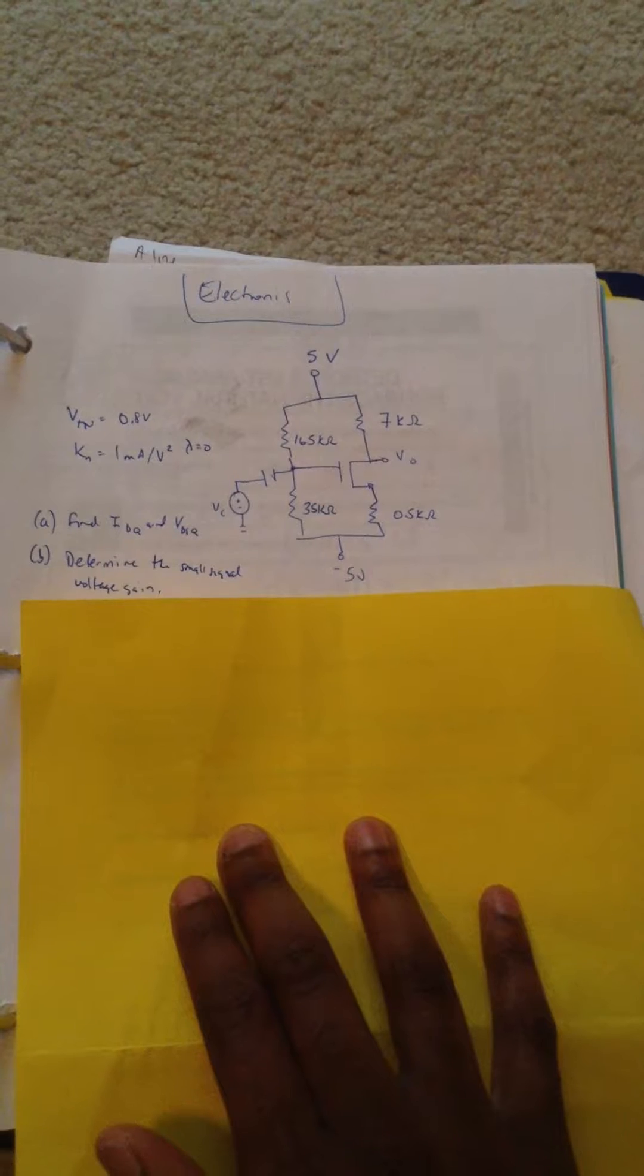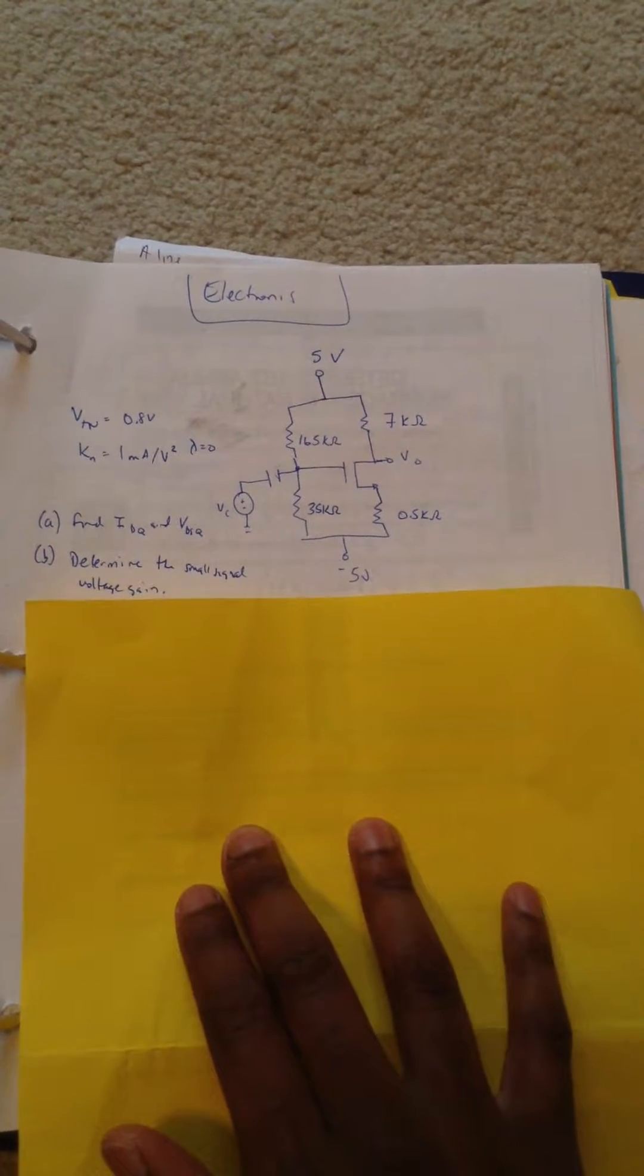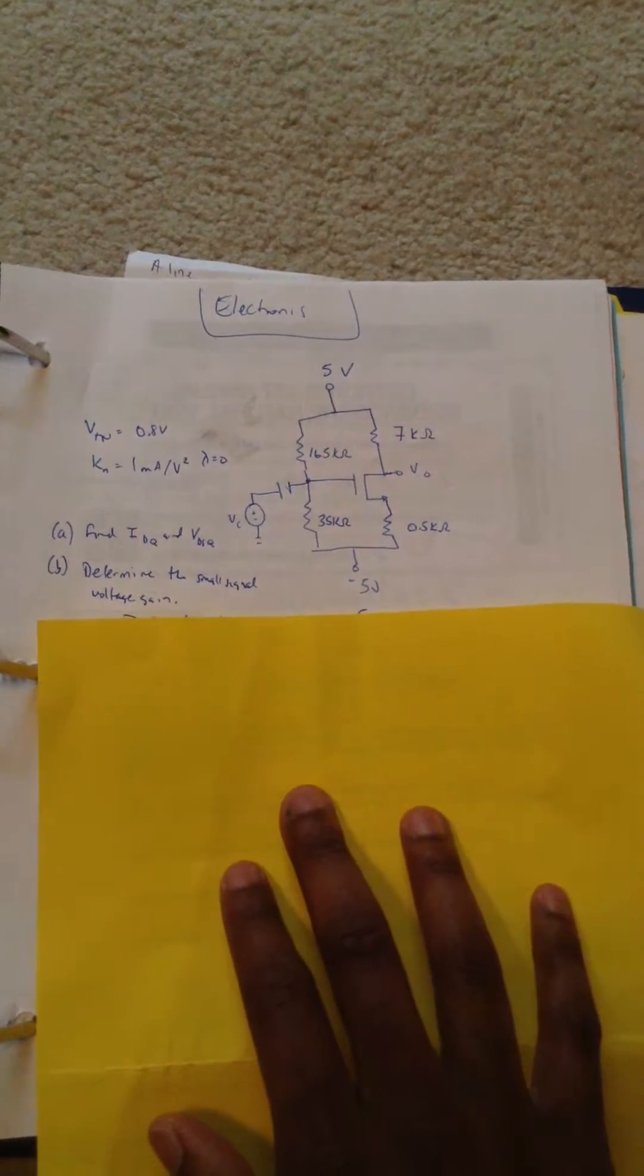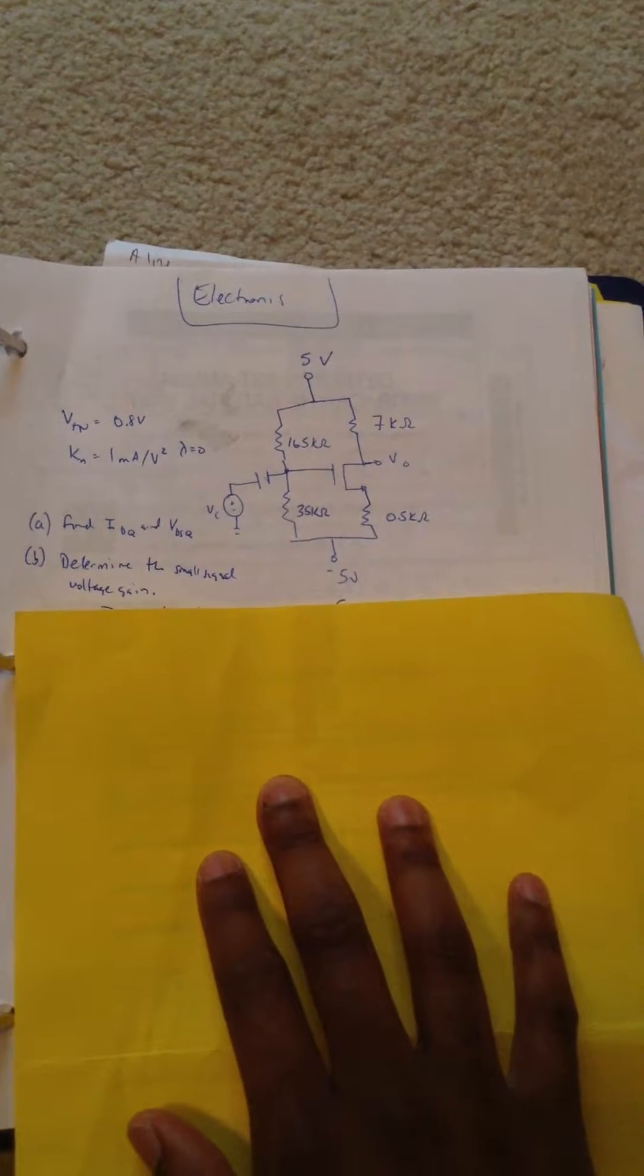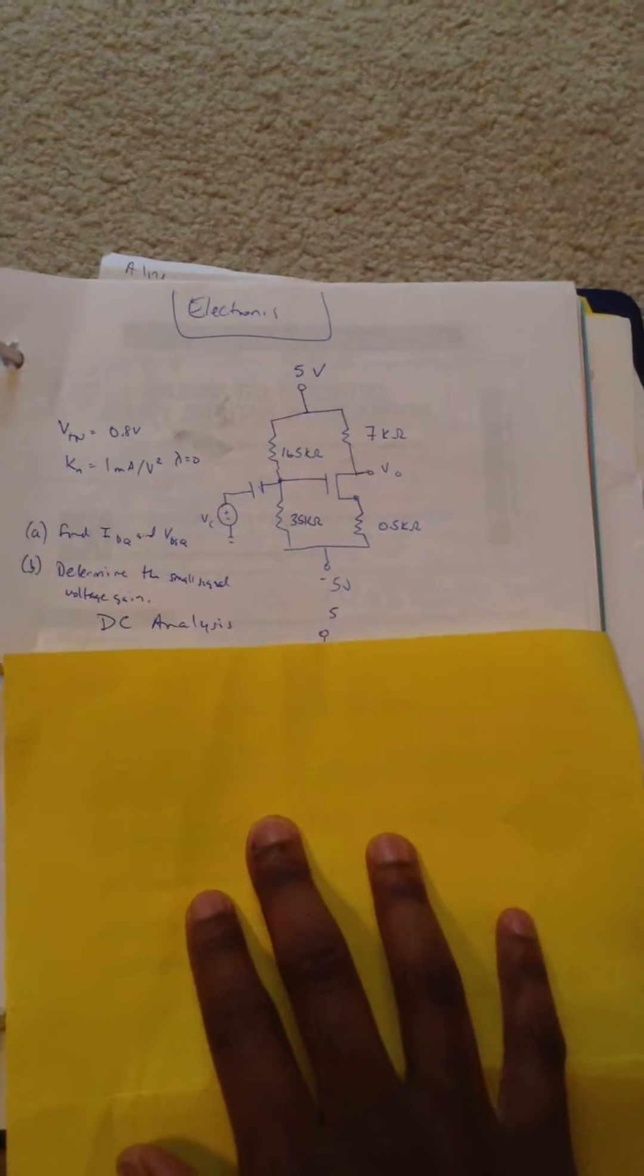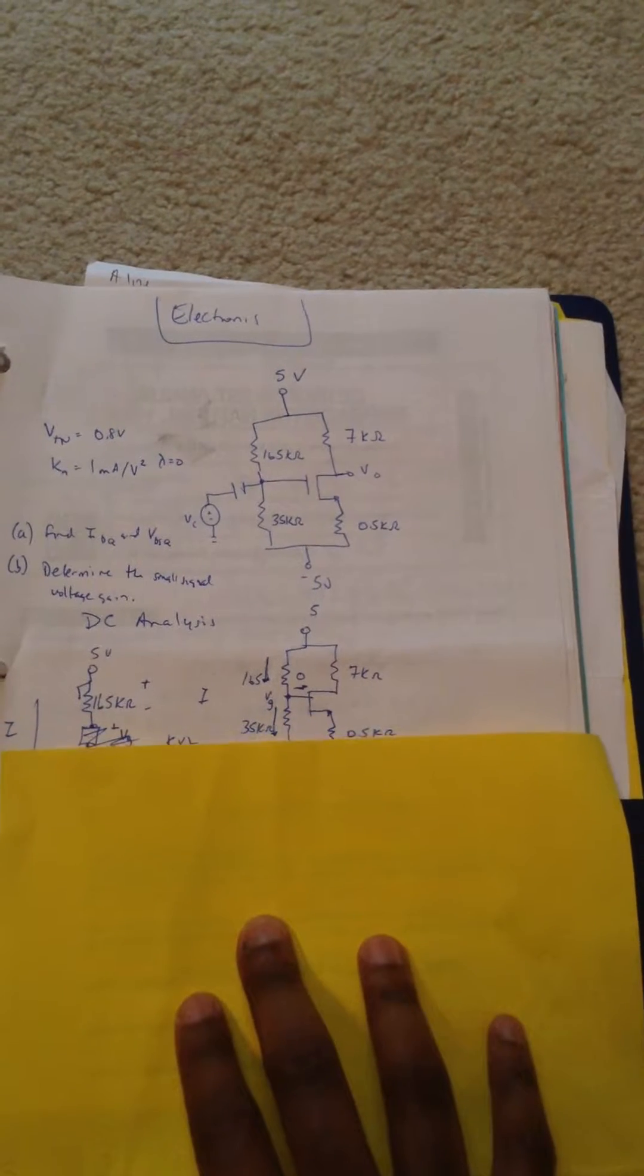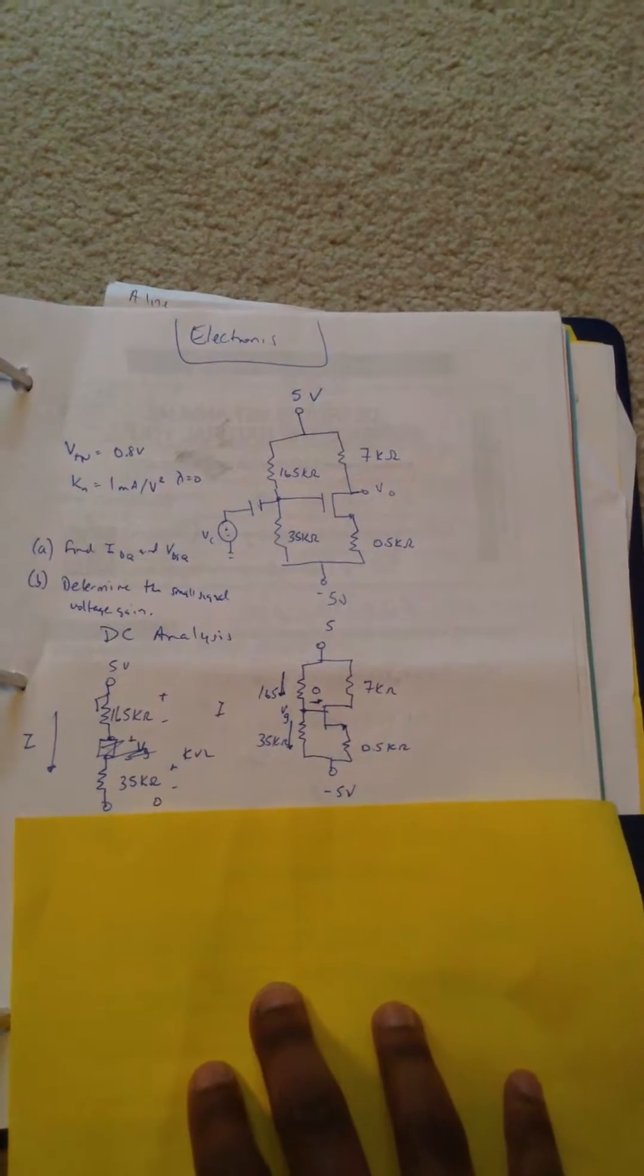First, we have to redraw this circuit into a DC equivalent circuit, which in DC, capacitors are open circuits. So we redraw the circuit, and it's redrawn here.